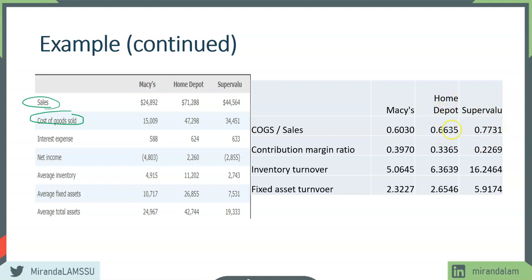The contribution margin ratio is one minus the cost of goods sold ratio, which may be more intuitive. Macy's has a higher contribution margin ratio compared to Super Value. Next, we can look at inventory turnover — sales divided by average inventory. Based on the industry, we'd expect Macy's to have a lower turnover compared to a grocery store. Macy's inventory turnover is about 5 times, slightly higher for Home Depot, and very high for Super Value — as expected, since you don't want grocery items sitting on shelves for long.